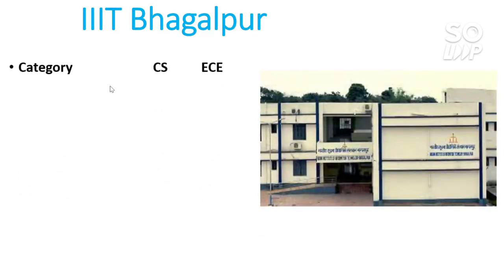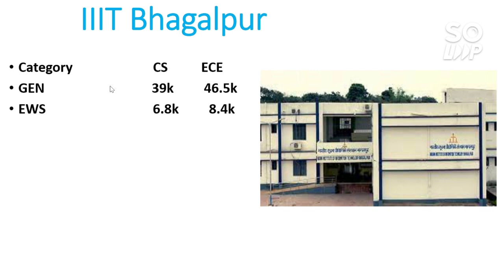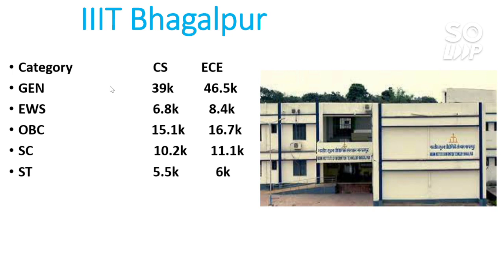Now for IIIT Bhagalpur. This is not a top IIIT but it is better than some private colleges. For General — CS 39,000 and EC 46,500. For EWS — CS 6,800 and EC 8,400. This is a lower-ranked IIIT that you can get at a relatively low rank. For OBC — CS 15,100 and EC 16,700. For SC — CS 10,200 and EC 11,100. For ST — CS 5,500 and EC 6,000.